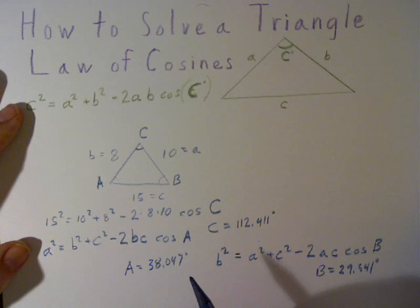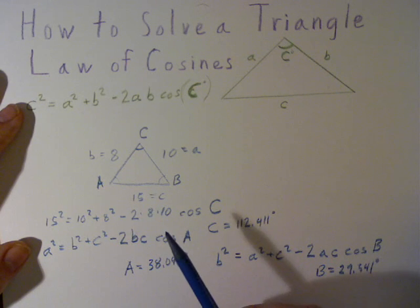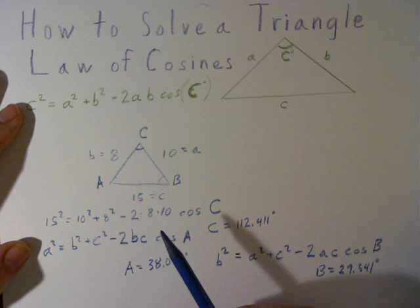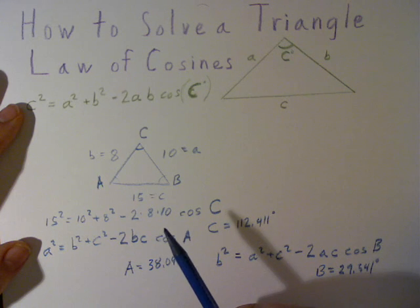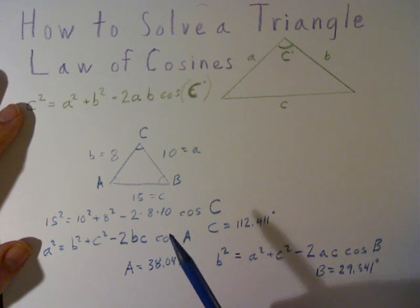The law of cosines, as I mentioned, is also useful for when we have two sides and an angle. We can solve for the other side and then the other angles.